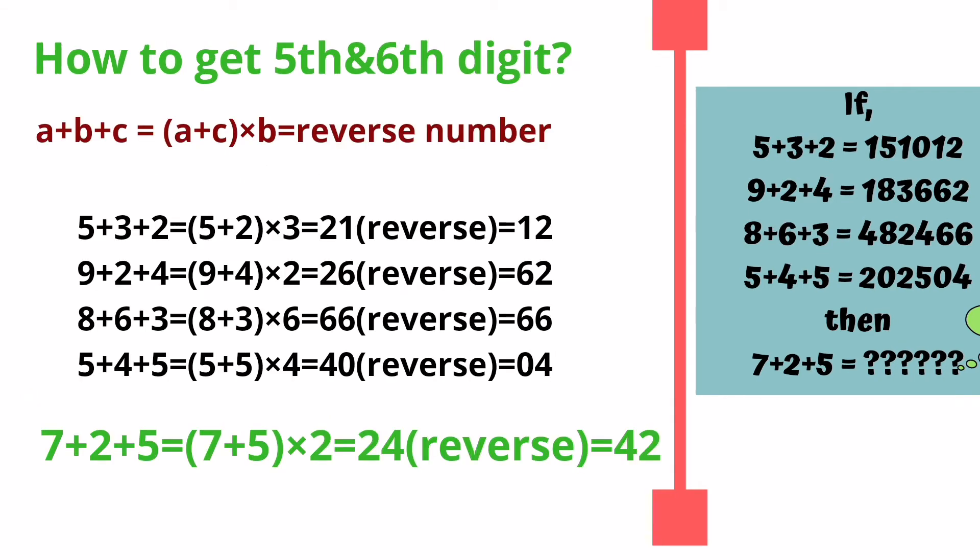Now how to get fifth and sixth digits. Add first and last digits, then multiply by second digit. Then you reverse the number. You can see: 12, 62, 66, 04.